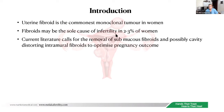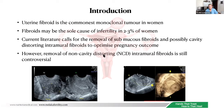Current literature calls for the removal of submucous fibroids and possibly cavity-distorting intramural fibroids to optimize pregnancy outcome. However, removal of non-cavity-distorting intramural fibroids is really controversial. When I say non-cavity-distorting fibroids, it's fibroids present in the uterus that do not distort the endometrial cavity. Does this kind of fibroid cause infertility, and should we remove it? This will be my discussion today.